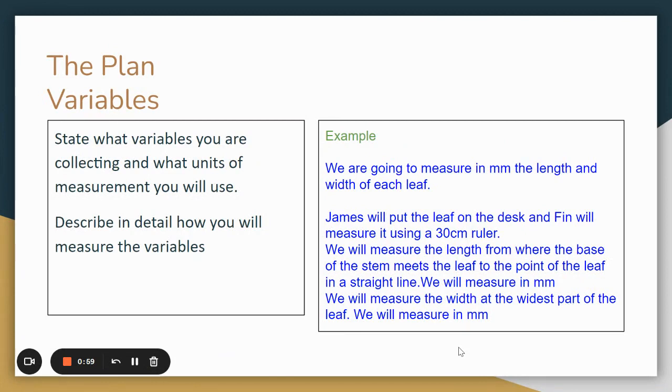The first thing we need to look at is to state our variables, what they are, how we're collecting them, what units we are using to measure them in, and we need to describe that in detail. So we're going to measure in millimeters the length and width of each leaf. James will put the leaf down on the desk and Finn is going to measure it using a 30 centimeter ruler.